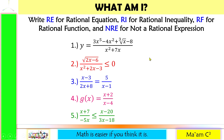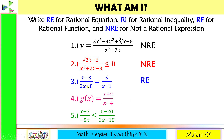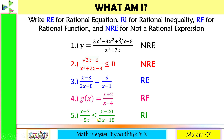Number one is NRE because of the cube root here. Number two is also NRE because of the square root here. Number three is a rational equation because both sides are rational expressions with an equal sign in between. Number four is a rational function — we have the name of the function and the equal sign. And the last one is a rational inequality: both sides are rational expressions with an inequality symbol in between.